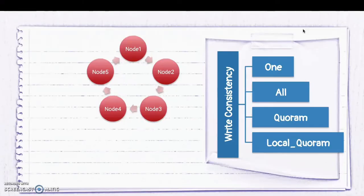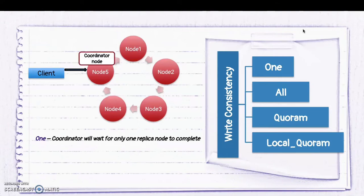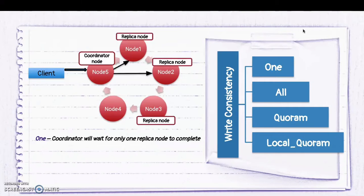Write consistency has four consistency levels: Level 1, All, Quorum, and Local Quorum. With consistency Level 1, only one replica node needs to complete the write operation for the request to succeed. Say we have a client who initiates a write operation. It connects with any node, which acts as a coordinator node. If the client sends a request to node 5, node 5 becomes the coordinator. Based on the partitioning key and replica placement strategy, it decides which nodes the data must be written to — say nodes 1, 2, and 3 — and sends the request simultaneously to all three.